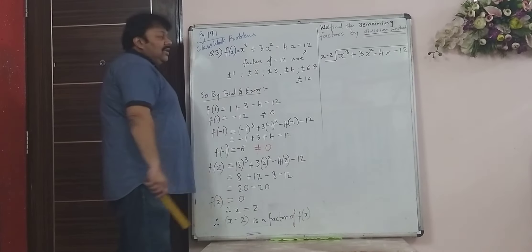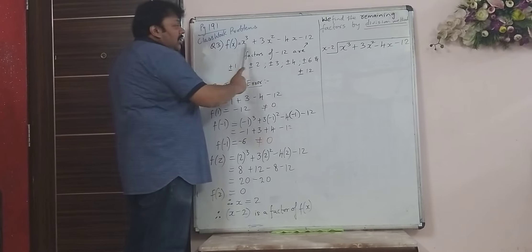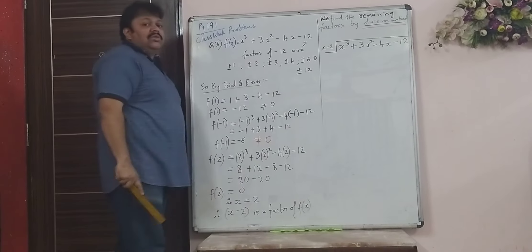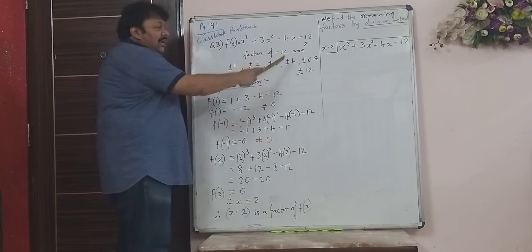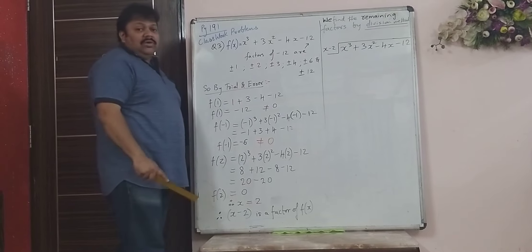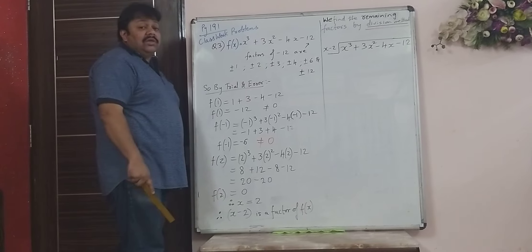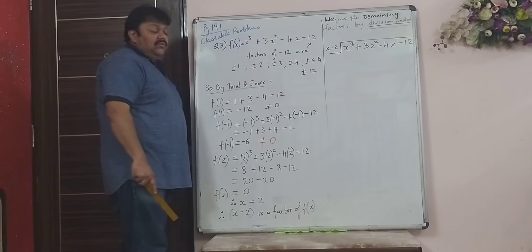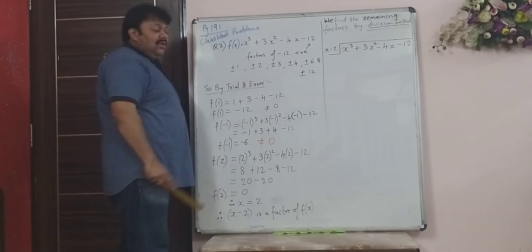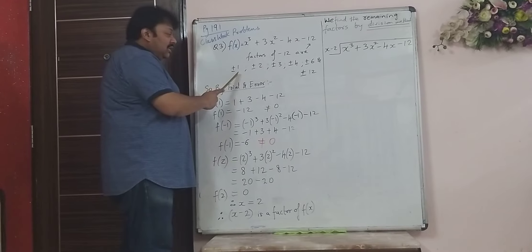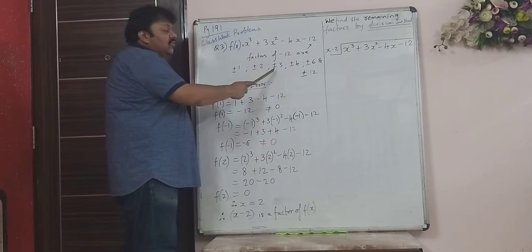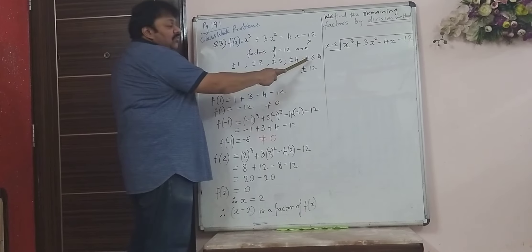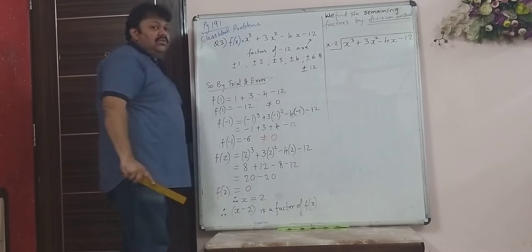How to find the first factor? In this polynomial, the constant term is minus 12. Since minus 12 is the constant term, we first see what are the factors of minus 12. The factors of minus 12 are ±1, ±2, ±3, ±4, ±6, and ±12.